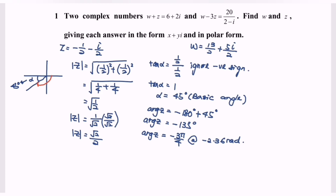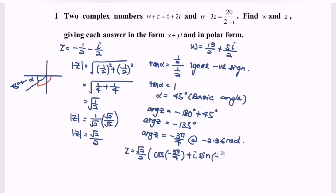Express your answer in 3 significant figures. So in polar form, z equals (square root of 2 over 2) multiplied by (cos(negative 3π over 4) plus i sin(negative 3π over 4)). That is the polar form for z.